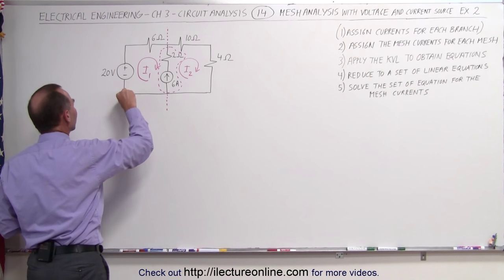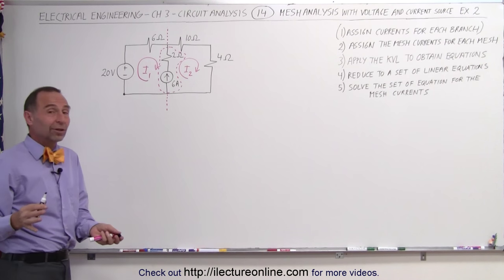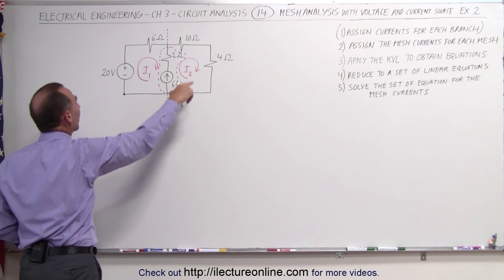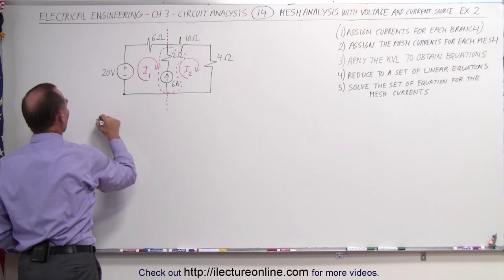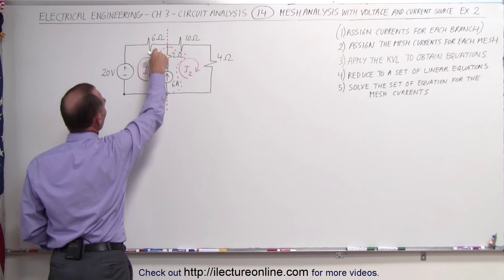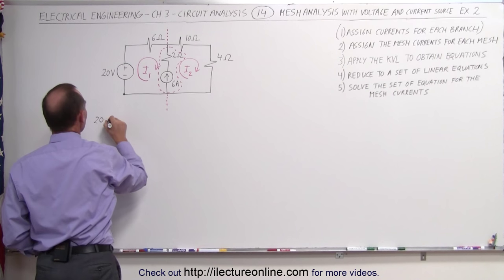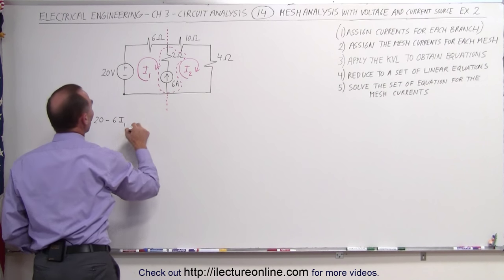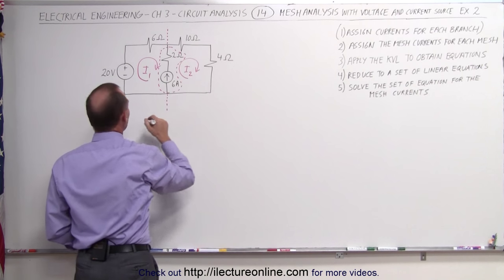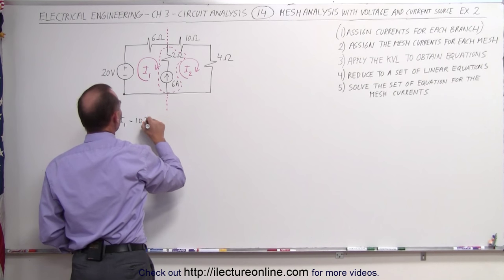Starting at our lower left corner, you can start at any corner you like. I happen to like that lower left corner. Let's start from here, go around the loop. We first have a 20 volt rise. Here we have a drop across a 6 ohm resistor, 6 times I1, that's minus 6 times I1. Here we have a drop across a 10 ohm resistor, that would be minus 10 times I2.